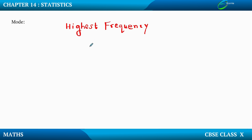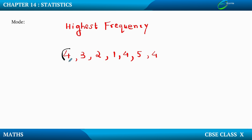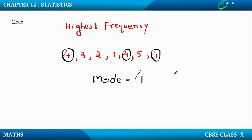Highest frequency means the frequency that repeats for the maximum number of times. Suppose we have an example. This is the raw data. We can see that 4 repeats for the maximum times, that is thrice. So we can say that MODE is 4, because 4 repeats for the maximum times. Very simple.